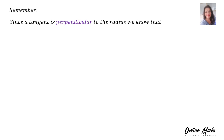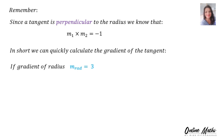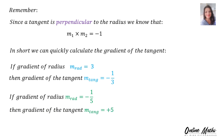Remember, since a tangent is perpendicular to the radius, we know that one gradient times the other gradient is equal to negative one. So we can quickly calculate the gradient of the tangent. If the gradient of the radius is equal to three, then the gradient of the tangent is minus one over three. What you do is you swap the number and you swap the sign. If the gradient of the radius is minus one over five, then the gradient of the tangent is plus five. Swap the number, swap the sign.